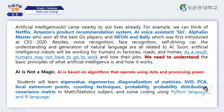Artificial intelligence has come into our lives every day. For example, we can think of Netflix, Amazon's product recommendation system, AI voice assistants, and AlphaGo, which won against all the best Go players, and Neon and Bali, which were first introduced at CES 2020. Besides those, voice recognition, face recognition, self-driving cars, and the understanding and generation of natural language are all related to AI.